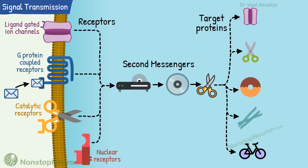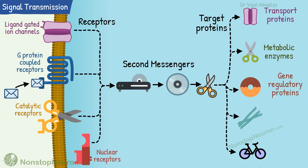Finally, the signal goes to the target protein that initiates the ultimate response. A target protein can be a transport protein that alters ion transport across the cell membrane, a metabolic enzyme that alters metabolic reactions occurring in the cell, a gene regulatory protein that alters gene expression, a cytoskeletal protein that alters the shape or movement of the cell, or a cell cycle protein that alters growth and division of the cell.